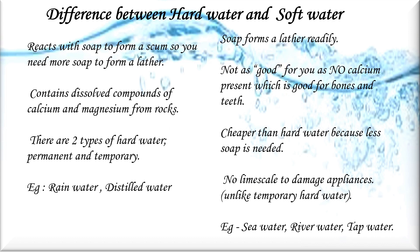The difference between hard water and soft water: Hard water reacts with soap to form scum, so more soap is needed to form lather. It contains dissolved compounds of calcium and magnesium from rocks and is of two types — permanent and temporary. Soft water allows soap to form lather readily. It is not as beneficial as hard water since no calcium is present, which is good for bones and teeth. Soft water is cheaper because less soap is needed and there is no limescale to damage appliances unlike temporary hard water. Examples of hard water: rain water and distilled water. Examples of soft water: sea water, river water, and tap water.